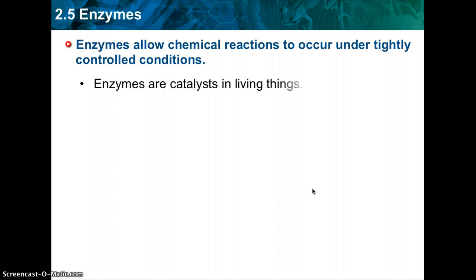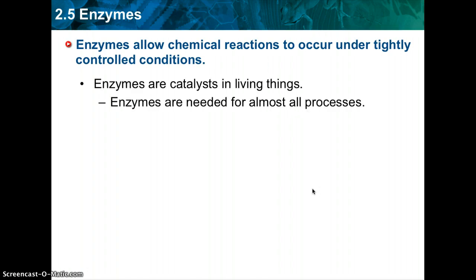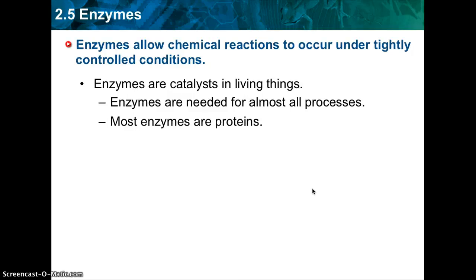Enzymes allow chemical reactions to occur under tightly controlled conditions — they are catalysts in living things. You're going to need enzymes for pretty much all processes, and most enzymes are proteins, which are made up of amino acids. Disruption in homeostasis can prevent enzymes from functioning, and remember, homeostasis is maintaining a constant internal environment.